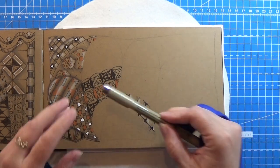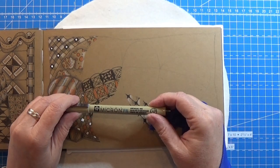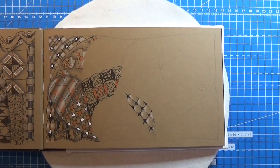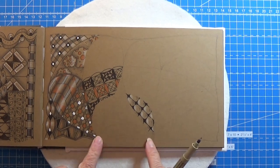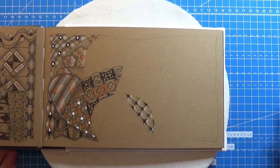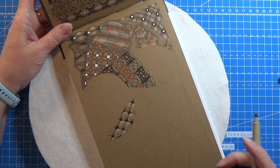I am going to take my black Micron PN for this and this is a border and I am going to place it down here I think. So let me turn my book a bit.